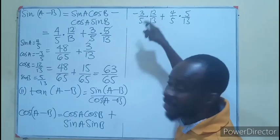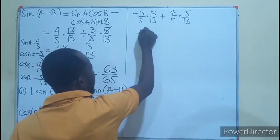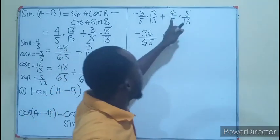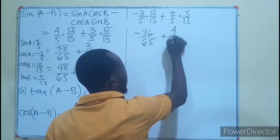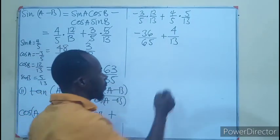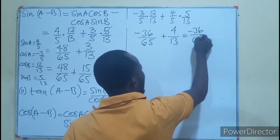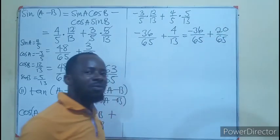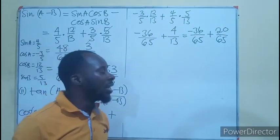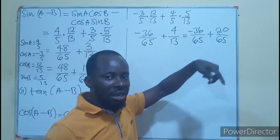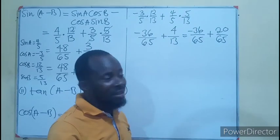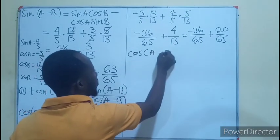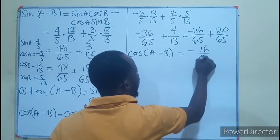For the first term: 3 × 12 = 36, so (−3/5)(12/13) = −36/65. Adding: −36/65 + 20/65. Since they share the same denominator, we just add the numerators: −36 + 20 = −16. So cos(A - B) = −16/65.